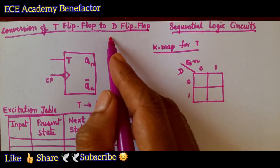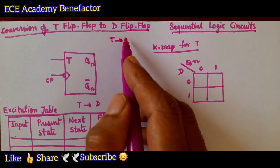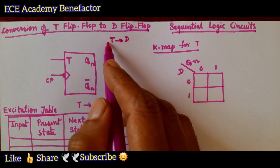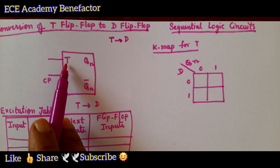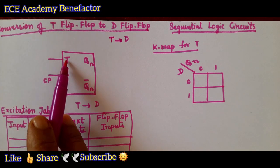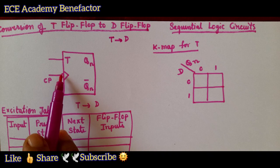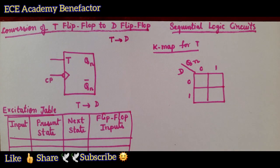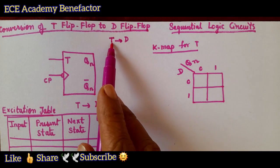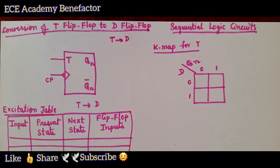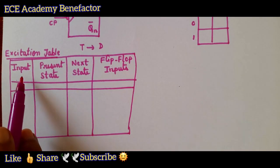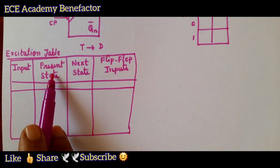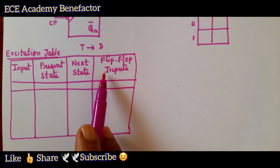What we need to do is convert the T flip-flop to D flip-flop. The T flip-flop is drawn here. It is a single-input flip-flop; T is the input, clock pulse is negatively edge-triggered — a bubble is there — and the outputs are Q and Q-bar. For converting T flip-flop to D flip-flop, we need an excitation table with four columns: input, present state, next state, and flip-flop input.